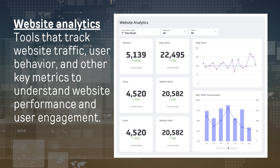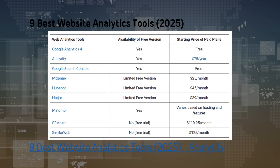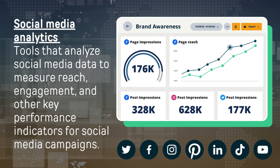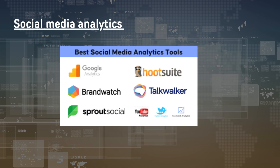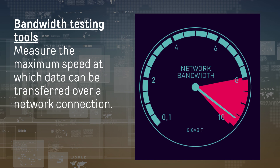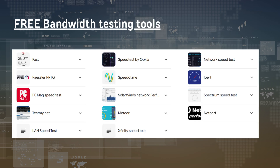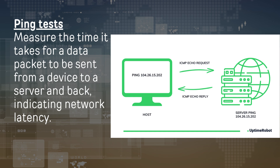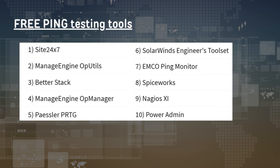Website analytics tools track website traffic, user behavior, and other key metrics to understand website performance and user engagement. Here are the nine best website analytics tools for 2025, according to Analytify. Social media analytics tools analyze social media data to measure reach, engagement, and other key performance indicators for social media campaigns. Bandwidth testing tools measure the maximum speed at which data can be transferred over a network connection. Ping tests measure the time it takes for a data packet to be sent from a device to a server and back, indicating network latency.